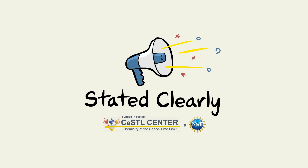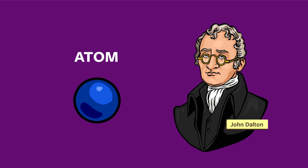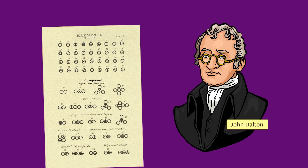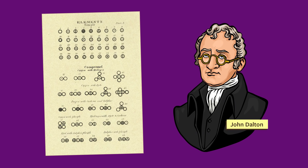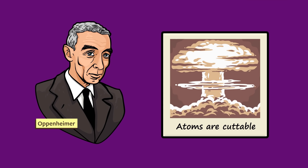Stated Clearly presents: What Are Atoms Made Of? As we learned in the last animation, the word atom means uncuttable. When John Dalton first discovered evidence that atoms exist, he gave them that name because he genuinely thought that they were uncuttable. He thought they were fundamental particles, the smallest bits of matter that exist. Well, it turns out that he was wrong.